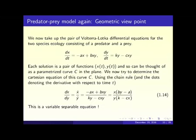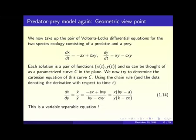We want to understand the Cartesian equation of this curve. We are given dx/dt and dy/dt. Applying the chain rule: dx/dy = ẋ/ẏ. From the first equation ẋ = -ax + bxy, and from the second ẏ = ky - cxy. The x factors from the numerator and y from the denominator, giving equation 1.14 — a variable separable equation.